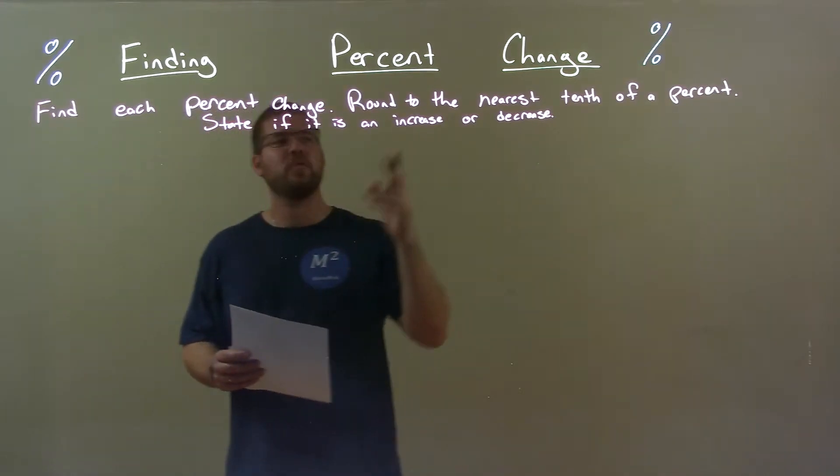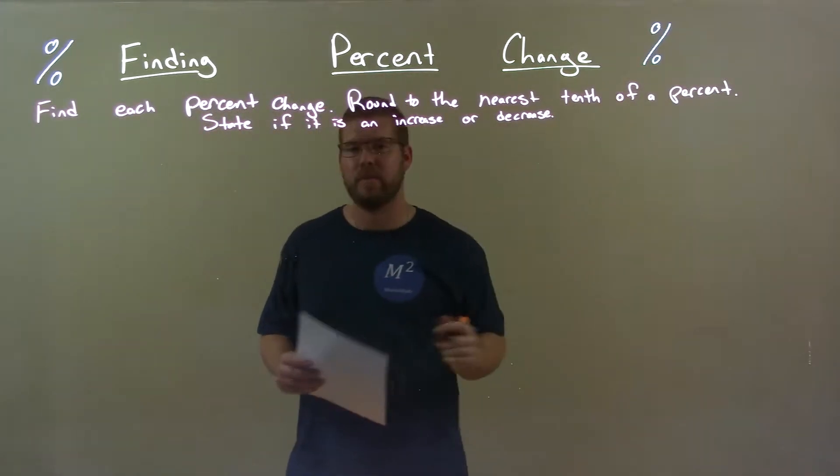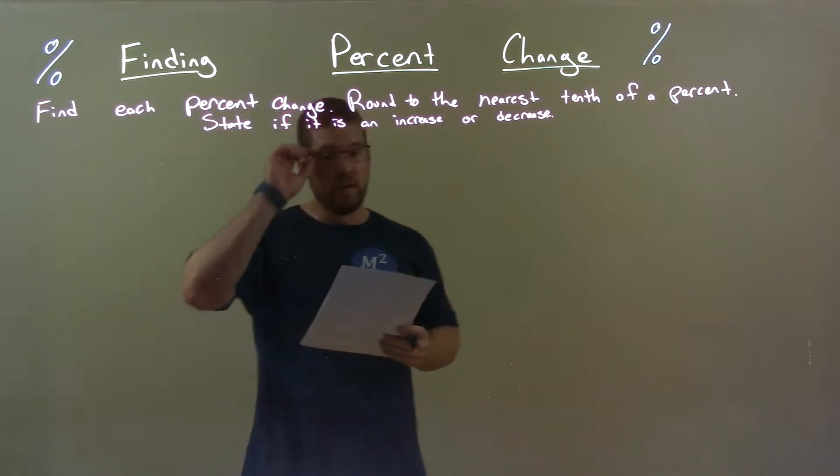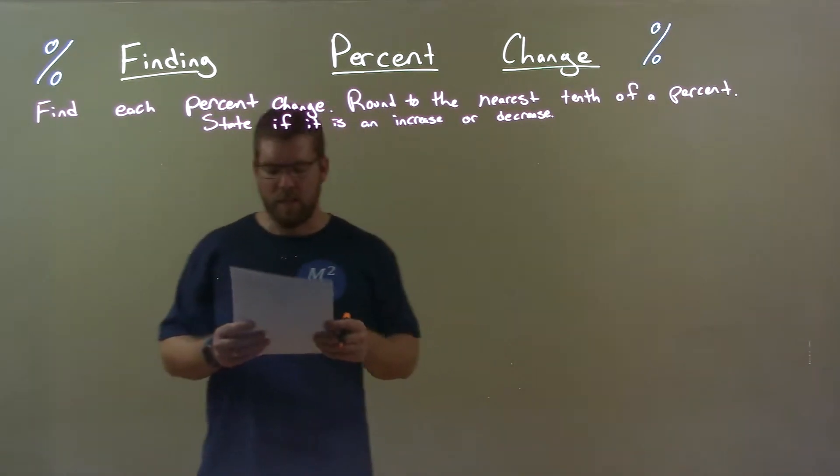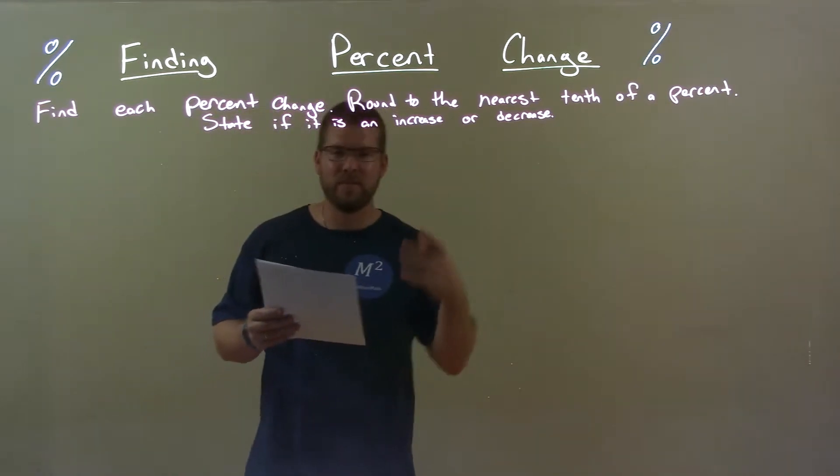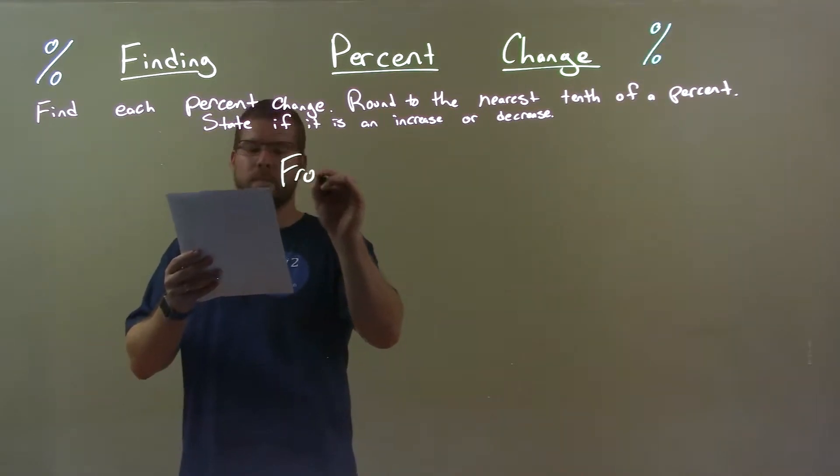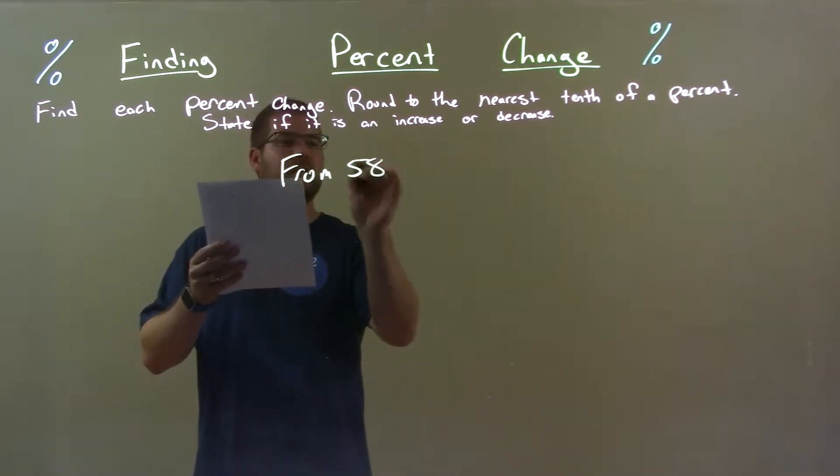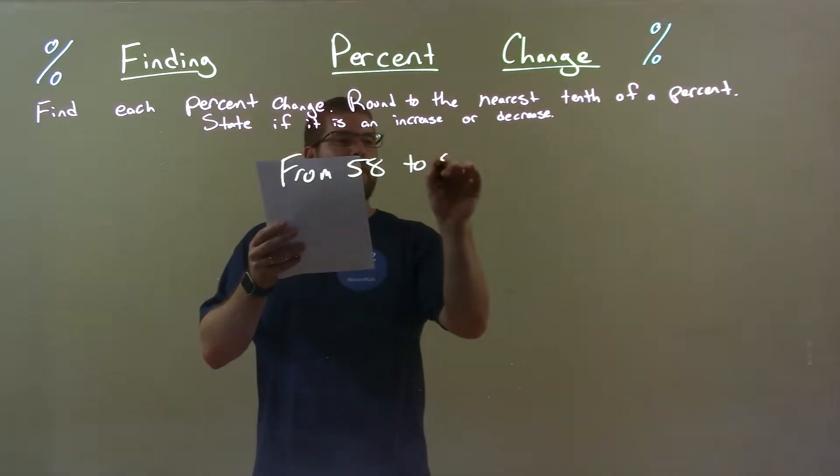We're going to find each percent change, round to the nearest tenth of a percent, and state if it's an increase or a decrease. So if I was given this problem from 58 to 53.